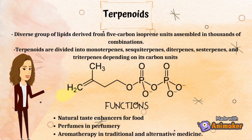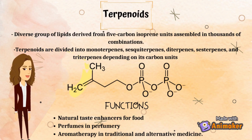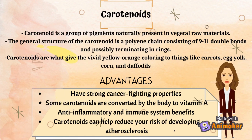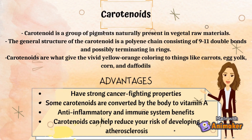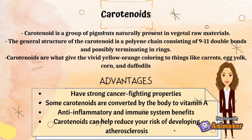Moving on to the second category of bioactive compounds, which is terpenoids. Terpenoids are hydrocarbons found in nature that are produced by a diverse range of plants and animals. Terpenoids have a variety of functional purposes including natural taste enhancers for food, perfumes in perfumery, and aromatherapy in traditional and alternative medicine. Nevertheless, the most beneficial phytochemicals are beta-carotene and other carotenoids in fruits and vegetables. We are going to focus on carotenoids because they provide many health benefits. They have strong cancer-fighting properties and some carotenoids are converted by the body to vitamin A, which is essential to vision and normal growth. Also, carotenoid-containing foods are often red, yellow, or orange — this is why orange juice has a high content of carotenoids.